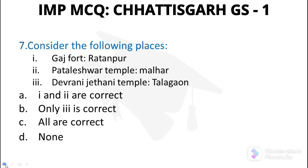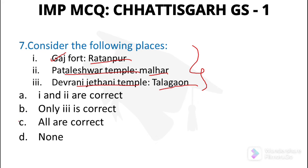Question number 7: We have to tell which place is correctly matched. Gaj Fort is in Ratanpur. Padaleshwar Temple is in Malhar. Devrani Jithani Temple is in Talagaon. All three are correctly matched, so all are correct.